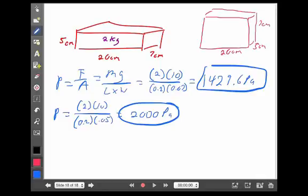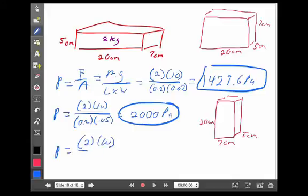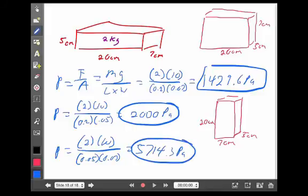Finally, if I were to turn the brick, well, now, the 20 centimeter part's not in contact, but the 7 centimeter and the 5 centimeter parts are in contact. The new pressure, well, again, the weight of the brick hasn't changed. But now, it's 0.05 and 0.07. And it jumps up to 5,714 Pascals. Almost 5 times the pressure of what it was in its first orientation.